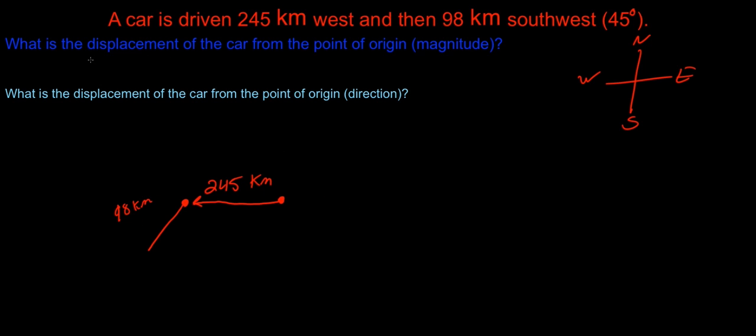First question asks what is the displacement of this car from the point of the origin, which is right here. So what is that magnitude? It'd be from here to here. Notice we cannot use Pythagorean theorem - we do not have a right triangle. We can make a right triangle by breaking this 98 kilometer vector into its y component and its x component.